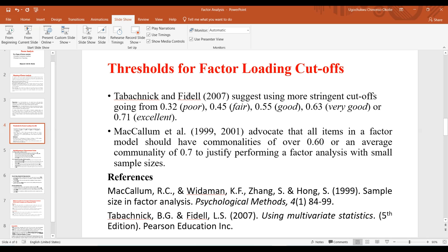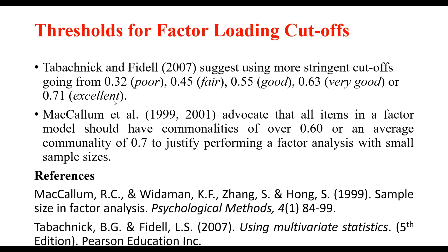Before demonstrating in SPSS, let's look at the threshold for factor loading cutoff. All items in a factor model should have communalities of over 0.6, or an average communality of 0.7, to justify performing a factor analysis with a smaller sample size. You can pause the video to copy these references.